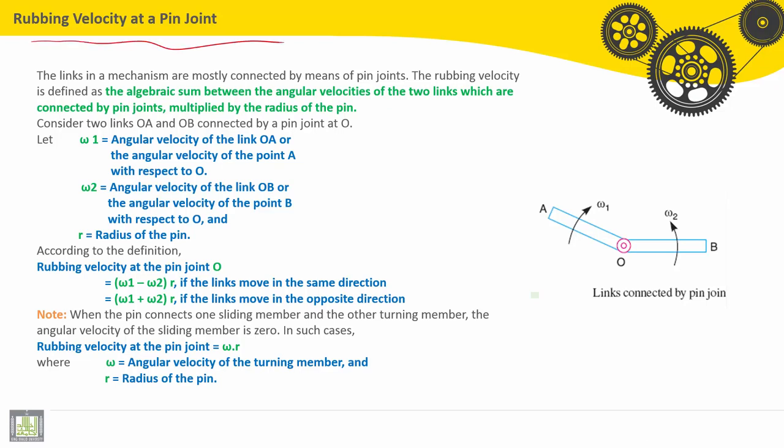We have links connected by pin joints: Link OA and Link OB, connected by a pin joint here. The links in a mechanism are mostly connected by means of pin joints. The rubbing velocity is defined as the algebraic sum between the angular velocities of the two links which are connected by pin joints, multiplied by the radius of the pin.